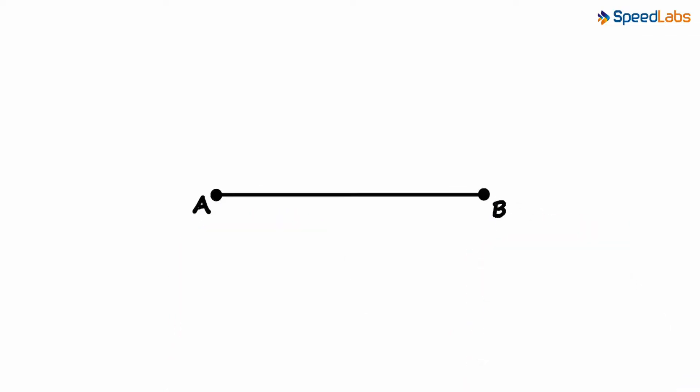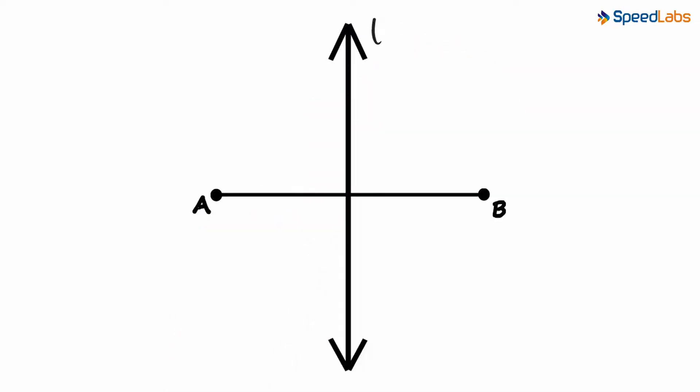This is a segment AB and this is a line L which is its perpendicular bisector. Since line L is a perpendicular bisector, it will be perpendicular to AB and both parts of the segment will be equal to each other.